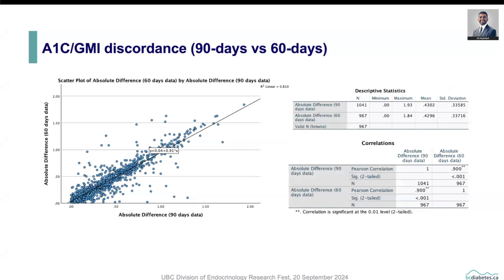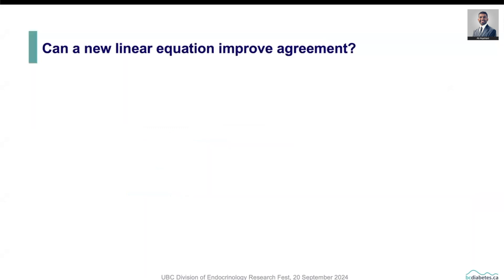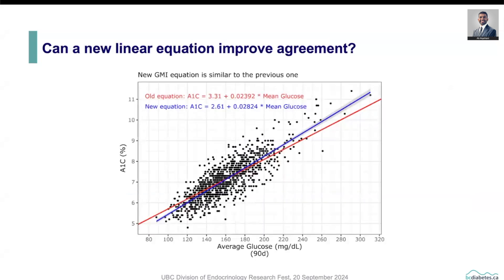We then looked at 90-day versus 60-day data and found no difference — they were almost identical. We also conducted a linear regression analysis and developed a new linear regression equation based on our data. As you can see in this slide, the red line represents the old Bergenstal equation, and the blue line represents our new equation. The old and new equations are very similar numerically, and the new equation did not reduce the discordance at the extremes of the spectrum. Therefore, we plan to explore a nonlinear regression analysis, which might help minimize this discordance.